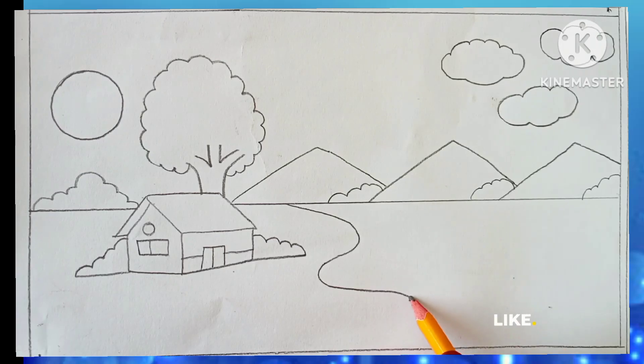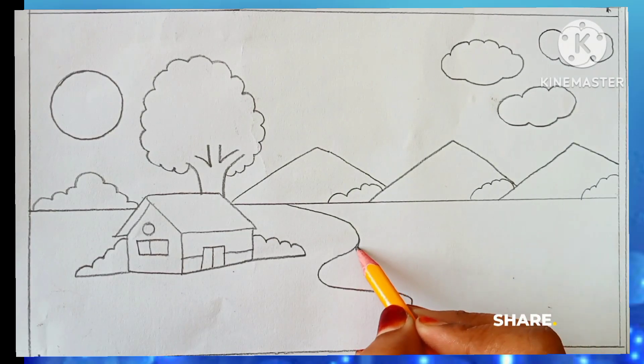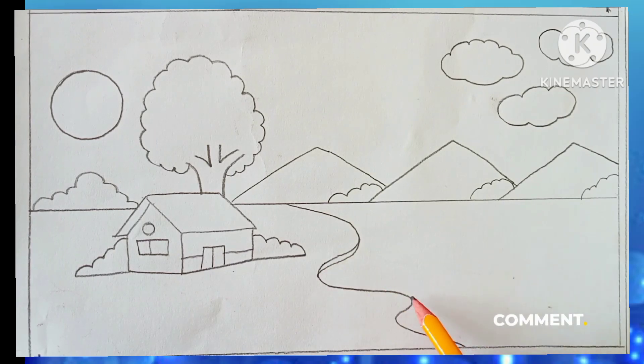Now we will draw a line directing from the mountains in a curvy manner, just to show the river on the right side of the house. And there we go. Our drawing is completed. I love this, I love this.